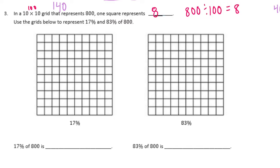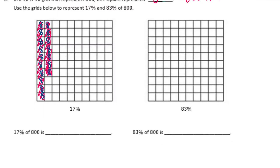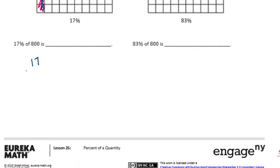Now it says use the grids below to represent 17 percent and 83 percent of 800. So 17 percent, I'm just going to shade in 17 squares. Now, if we have 17 shaded in, each of these blocks is equal to 8. What we can do is take 17 and multiply it by 8. 8 times 7 is 56. 8 times 1 is 8 plus the carry is 13. So that would be equal to 136.